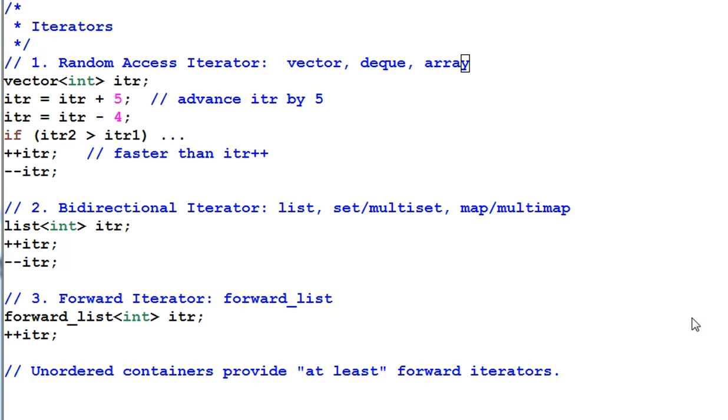We have talked a lot about the containers. Now let's look at the iterators. There are five categories of iterators.